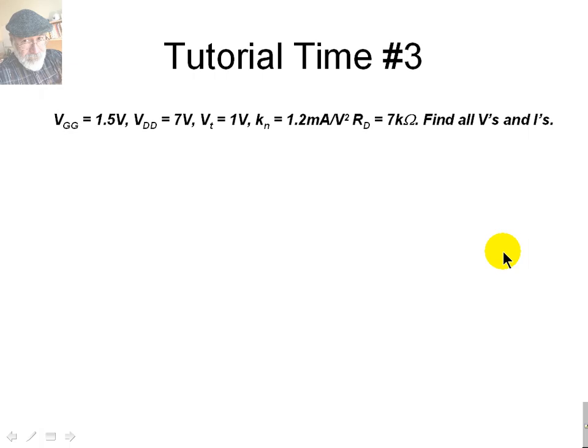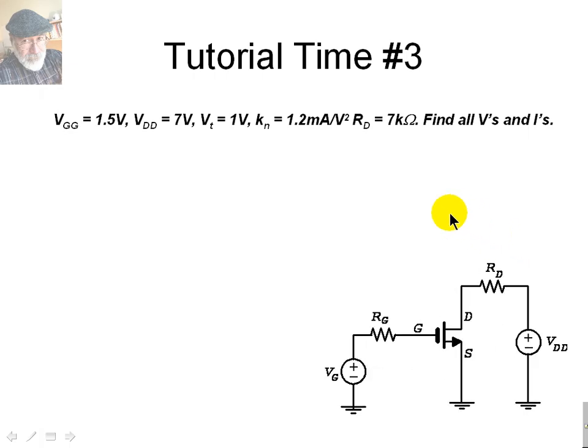Now, a third tutorial. Same circuit as before, but with different values for VGG, now it's slightly smaller. 1.5 volts only, and VDD goes back to its 7 volts value. The resistor continues to be 7000 ohms. Same question. Find all voltages and all currents.